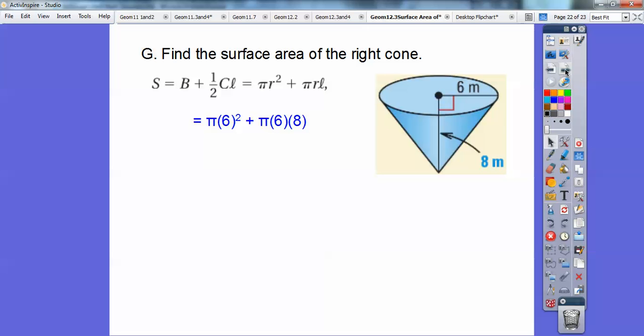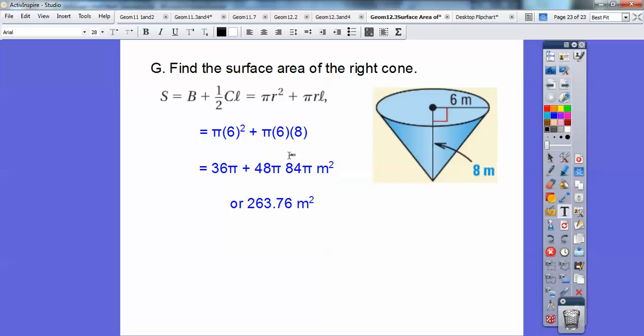Here we go. So pi times 6 squared plus pi times 6 times 8. And I get, let's see, there should be an equal sign right there. I forgot to put an equal sign right there. Equals. So I get 84 pi meters squared, or changing it to a decimal, 263.76 meters squared.